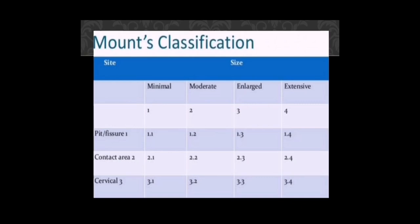There is also the Site and Size classification. According to this, we have three sites: pits and fissures, contact area, or cervical area. According to size: minimal involves only enamel; moderate involves dentine; large involves dentine and a little pulp; extensive involves pulp involvement and extensive loss of the crown anatomy of the tooth.